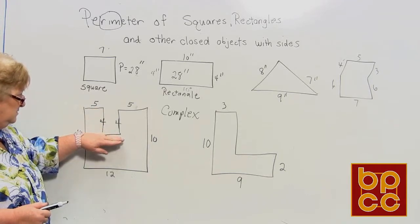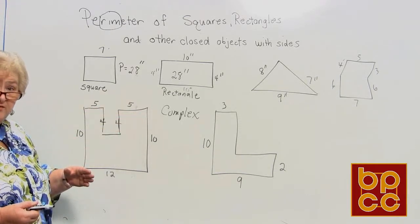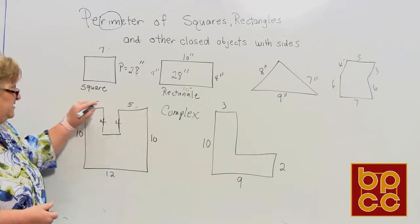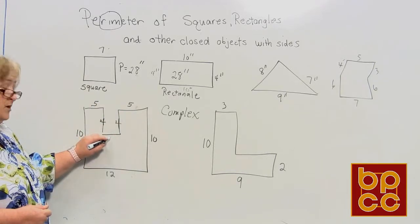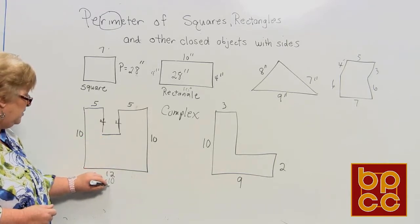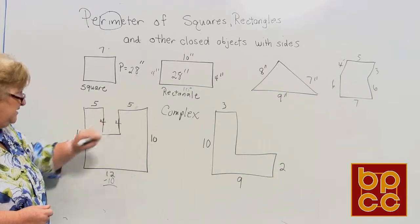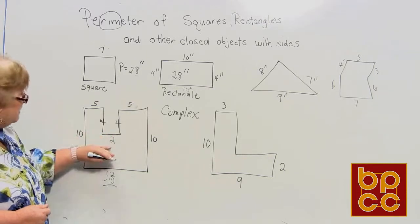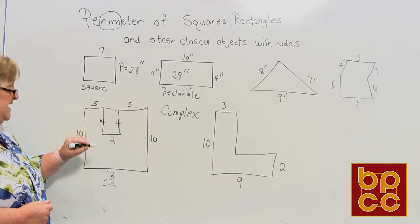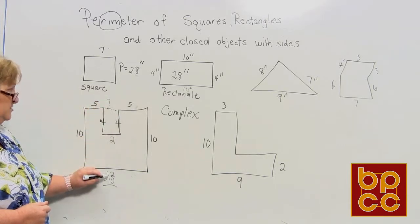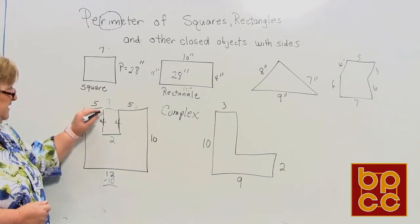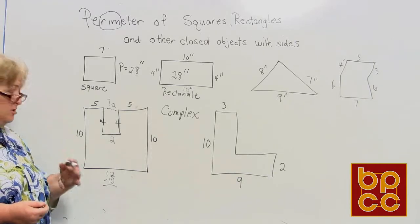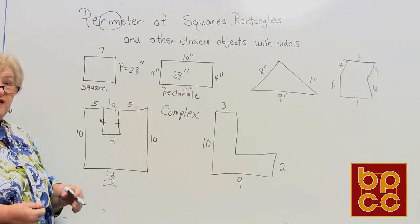The horizontal line at the bottom equals 12, so all horizontal lines — this one, this one, and this one — have to add up to 12. We already know that's five and that's five, giving us 10. So 12 minus 10 means the missing piece is 2. Five plus two plus five equals 12. Once all sides are labeled, add them all up for the complete perimeter.